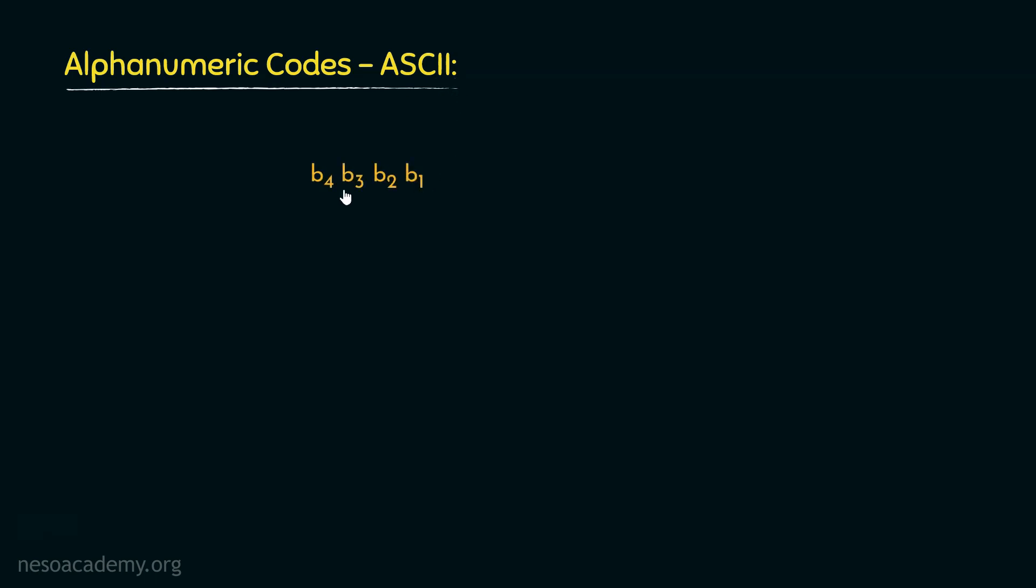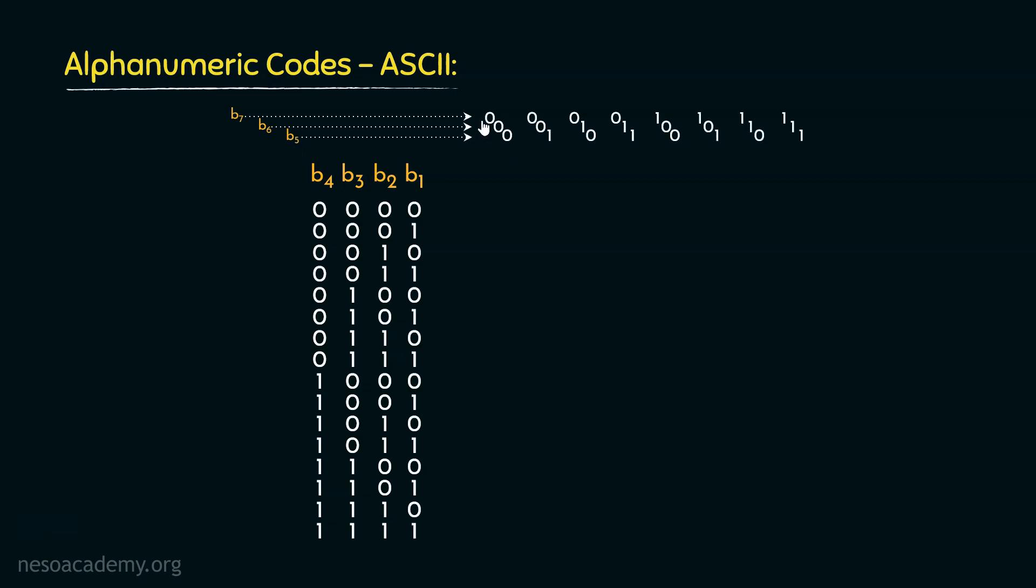So, what happens in case of ASCII, we have got 4 lower order bits, B1, B2, B3 and B4. And using these 4 lower order bits, you already know, we can generate 16 different patterns, starting from all zeros till all ones. Now apart from these 4 lower order bits, there are 3 more higher order bits. And using these 3, we can generate 8 different sequences, starting from 000 till 111. Now observe, in total we have 4 plus 3 that is 7 bits. Now using 7 bits, we can represent 2 raised to the power 7 that is 128 different patterns.